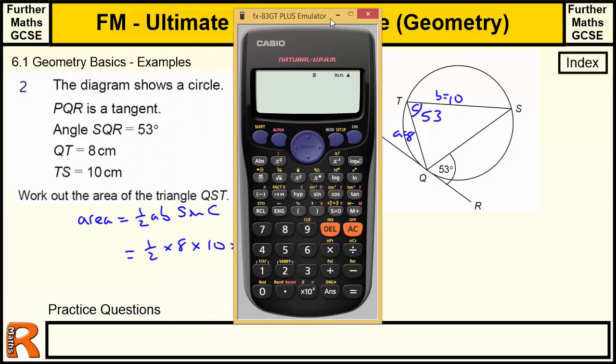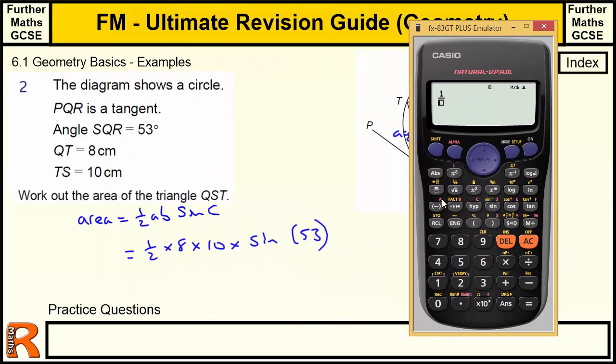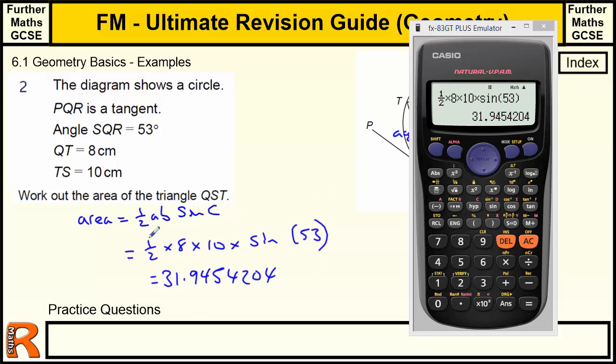So this area is going to be a half times 8 times 10 times the sine of 53. OK, let's bring the calculator in. So we have half of 8 times 10 times the sine of 53. And that gives us 31.9454204. I always recommend just writing out the answer the calculator tells you before you do any rounding. This doesn't actually ask you to do any rounding, so I wouldn't bother. I would just stick with that. And it's the area, so it's centimetres squared. But if you did have to round it, then standard rounding in sort of GCSE A-level maths is three significant figures. So if you look at the first three digits that are not zero, and don't start with zero. And then round it to the third one, which is 31.9.